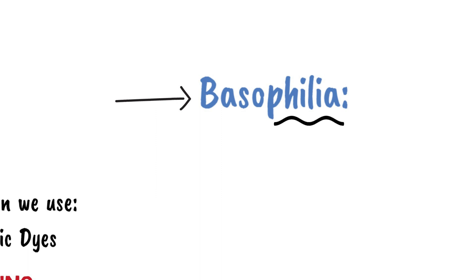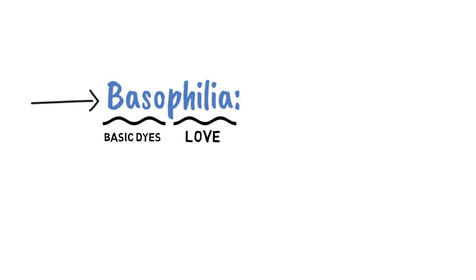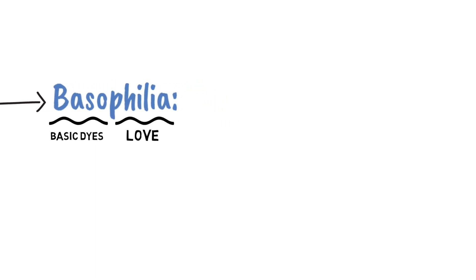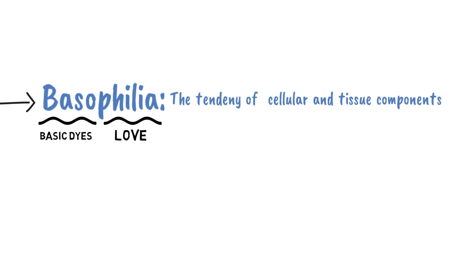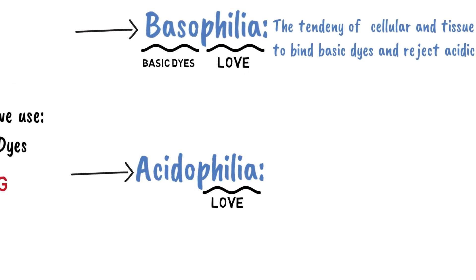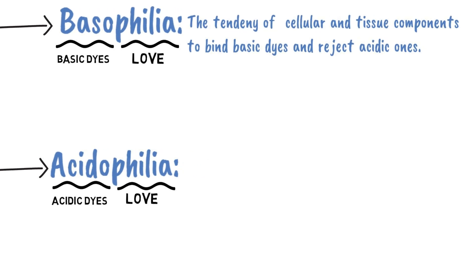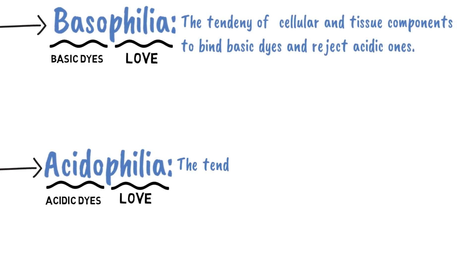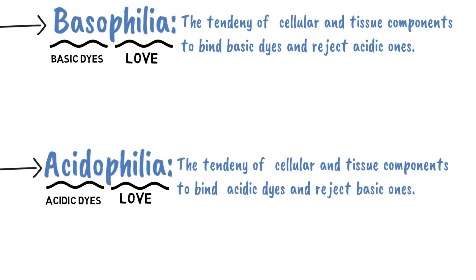Basophilia: the term 'philia' means love, and 'baso' refers to basic dyes — so technically it means love of basic dyes. Thus, basophilia is the tendency of cellular and tissue components to bind basic dyes and reject the acidic ones. And acidophilia: 'philia' means love, and 'acido' refers to acidic dyes — so technically it means love of acidic dyes. Thus, acidophilia is the tendency of cellular and tissue components to bind acidic dyes and reject the basic ones.